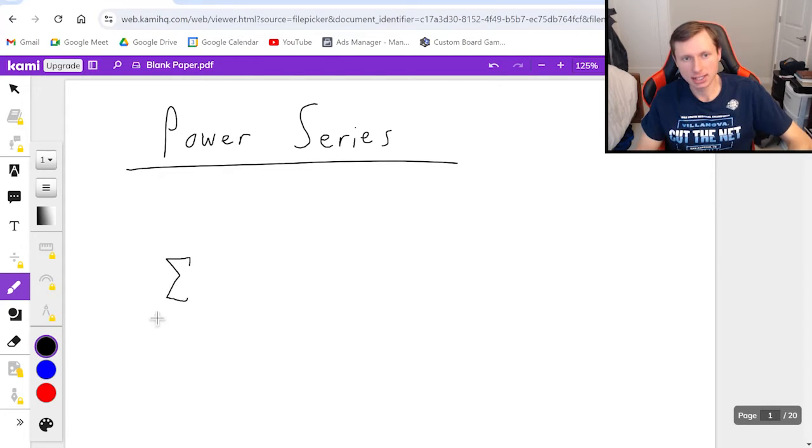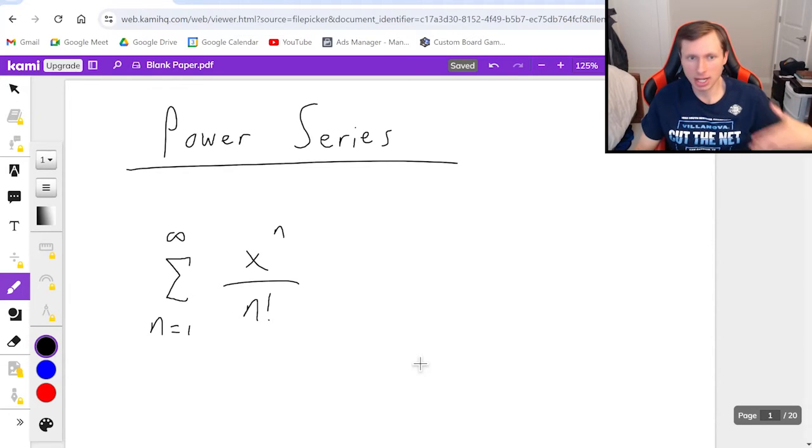So the first one I have today is the series from n equals one to infinity of x to the n over n factorial. If you remember there's two kinds of power series, there's the geometric and the ratio test. This is not geometric because of this n factorial in the denominator.